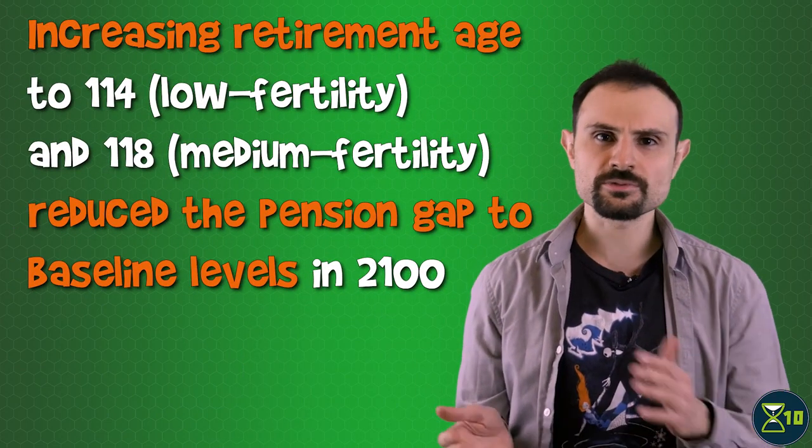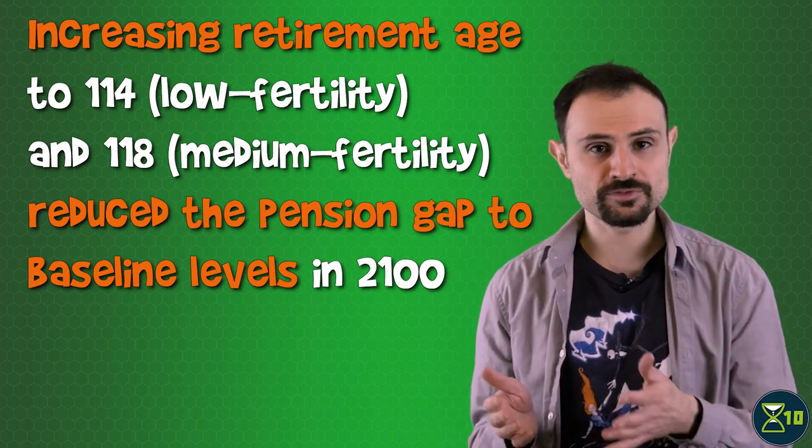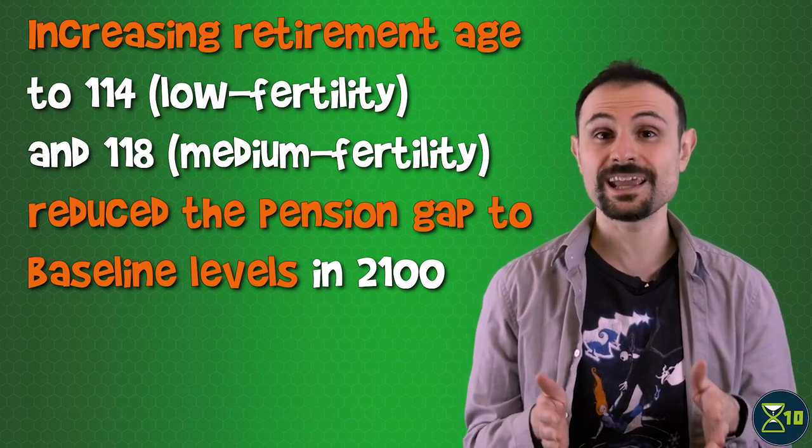So the researchers tweaked the negsense scenarios to allow retirement age to rise. The simulation gradually rose the retirement age of the low and medium fertility scenarios until it hit 114 and 118 years respectively in 2100. This reduced the pension gap to levels comparable to the baseline scenario, with a workforce participation of only around 43% in both negsense scenarios. Of course, as the researchers observed, talking about retirement at that point makes little sense. In a world where we don't lose our health with age, work patterns are bound to change significantly. People would probably drop out of work periodically to retrain or to rest, only to return to the workforce after a few years, depending on what their finances allow and how the job market will work in 2100, if there will even still be one.